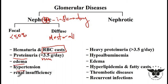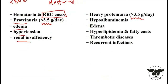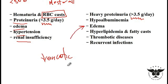Nephritic patients present with edema, hypertension, and renal insufficiency. Patients with nephrotic syndrome, on the other hand, due to the increased infiltration of macromolecules across the glomerular capillary wall, have large amounts of protein that leak through — more than three and a half grams per day. They also present with hypoalbuminemia because albumin gets lost in the urine, causing decreased oncotic pressure, so fluids leak into the interstitial space and cause edema.